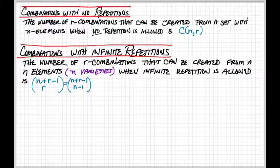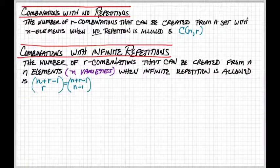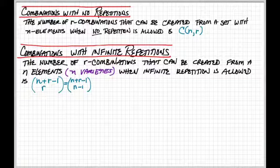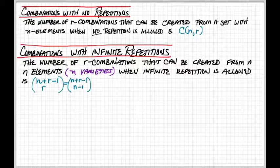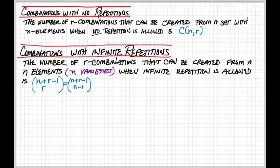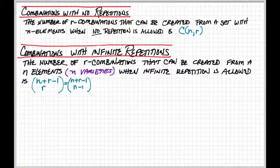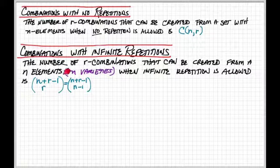If repetitions are allowed, this is very clever. This is what we call a stars and bars argument. But the idea is we are looking at R combinations that can be created from N, I like to call them varieties, when the infinite repetition is allowed. The computation, so R is the number of things you're selecting, N is the number of varieties you're choosing from, and the answer here is going to be N plus R minus 1, choose R, which is the same thing as N plus R minus 1, choose N minus 1.